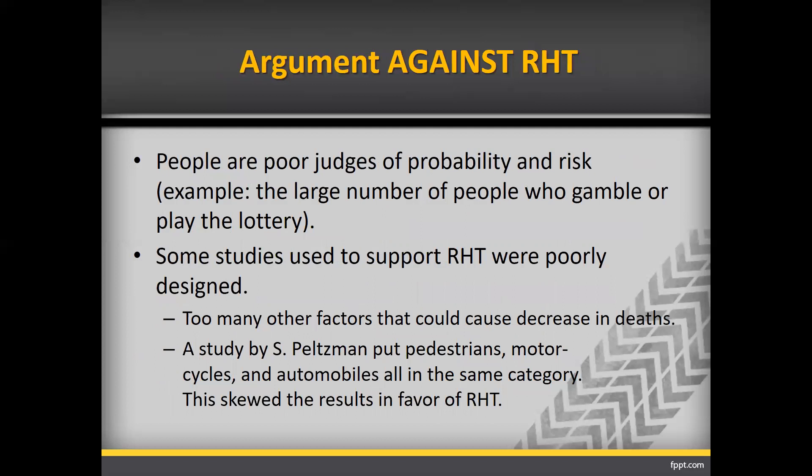Not everybody believes in risk homeostasis theory — some argue against it. One major argument is that people are very poor judges of probability and risk, as evidenced by the large number of people who gamble or play the lottery despite extremely small odds of winning. Additionally, some studies used to support RHT were poorly designed, and critics cite too many other confounding factors. They also tore apart the Peltzman study because he aggregated pedestrians, motorcycles, and automobiles into the same category, which skewed results in favor of RHT.